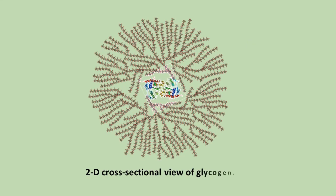Here you can see a two-dimensional cross-section view of glycogen. A core protein of glycogenin is surrounded by branches of glucose units. The entire globular complex may contain approximately 30,000 glucose units.